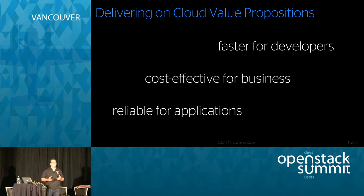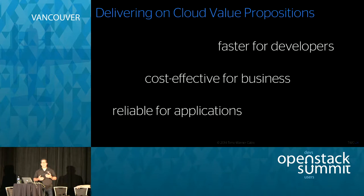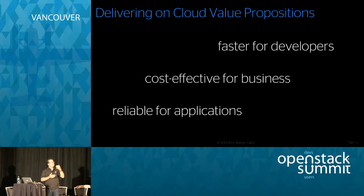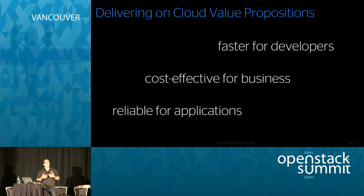Why did we do OpenStack? Why did Time Warner Cable do the broad cloud initiative? It really came down to three propositions. The first is about making sure your development community can move faster — giving folks a programmatic on-demand infrastructure so they can start to use automation. We support over-the-top video platforms and write clients for iPhones, tablets, and Roku boxes, and the pace of change there is very fast.